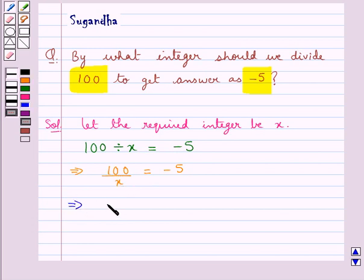So to get the value for x we need to divide 100 by minus 5. That is we have x is equal to 100 divided by minus 5.